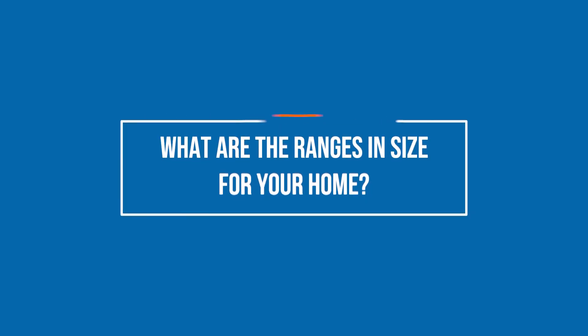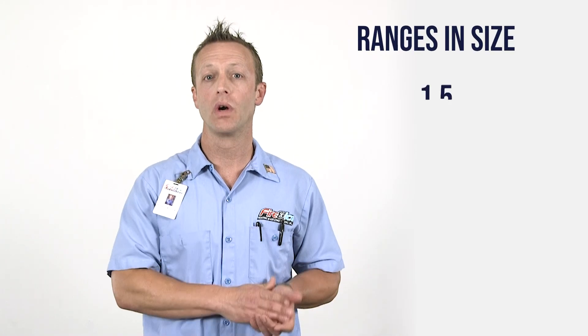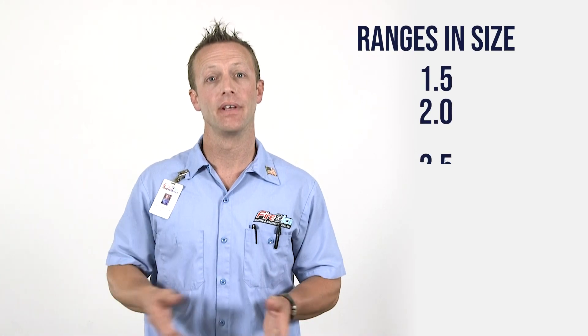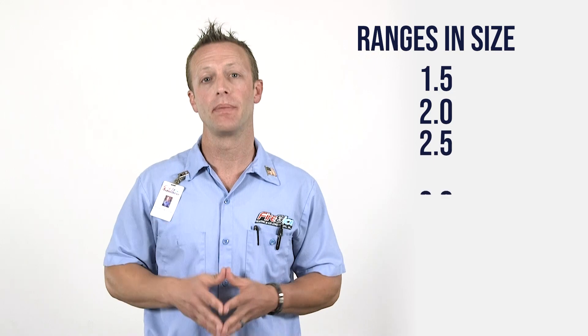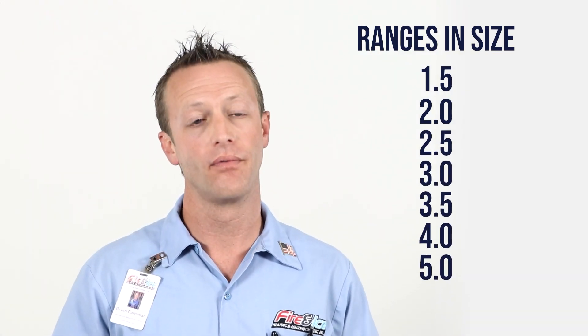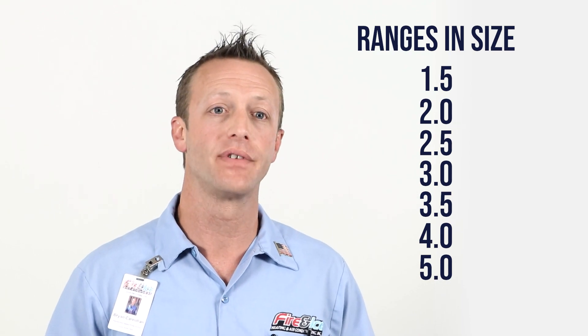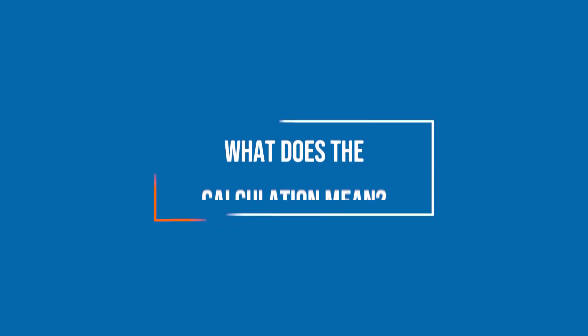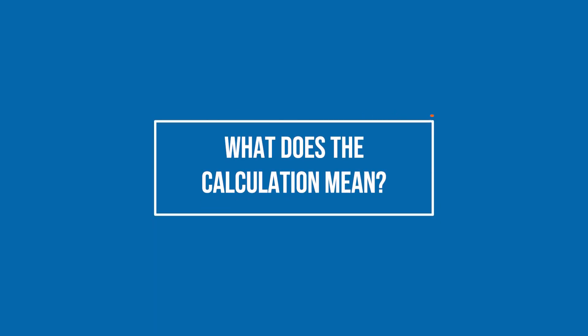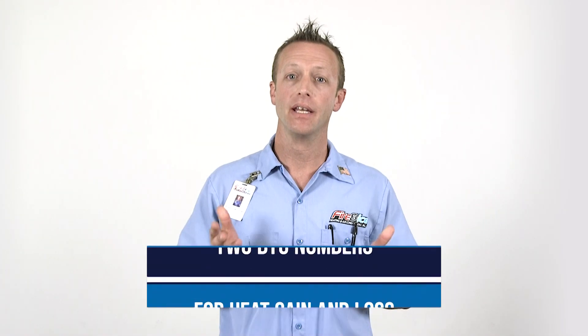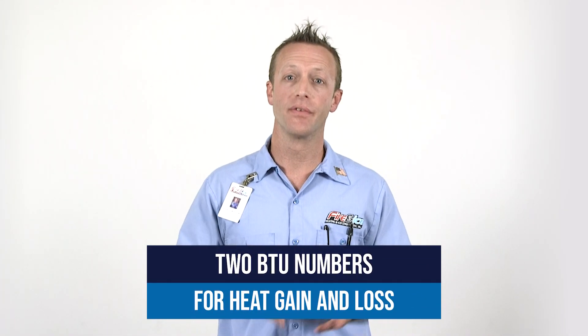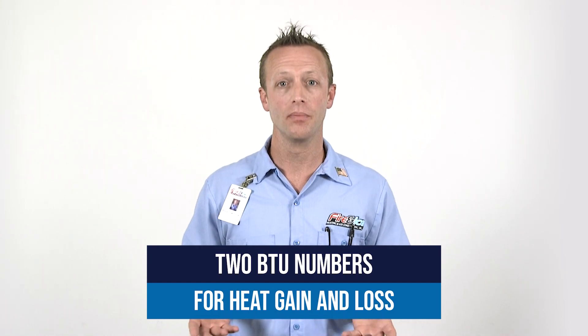So now that you have the calculation, what are the ranges in size for your home? Typically we will have ranges from one and a half ton up to five, ranging up in about half-ton size increments up to four, and then from four to five — there is no four-and-a-half ton size. Once you have calculated the Manual J load, you'll have two specific numbers: the amount of BTUs of heat gain or heat loss in your home.